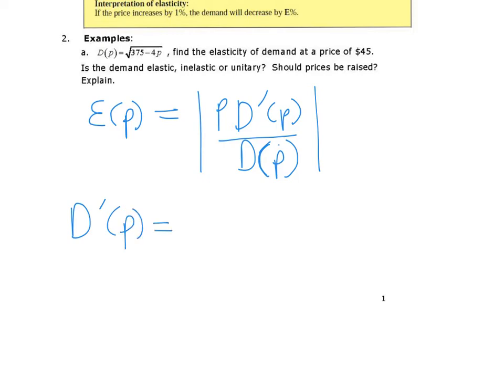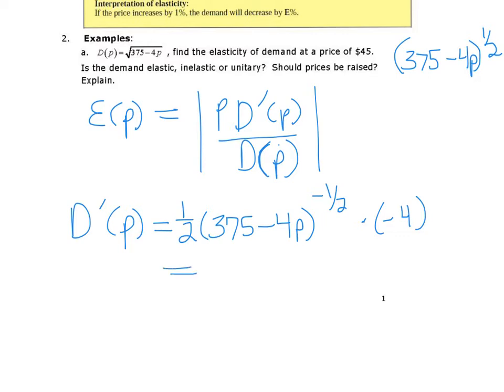So we should find what d prime of p is. Well, if we wrote that function, made it a little more derivative friendly, it would be 375 minus 4p all to the 1 half power. So taking the derivative of that with the chain rule, I'd get 1 half times 375 minus 4p to the negative 1 half power times negative 4. And simplifying that a bit, we'll get negative 2 times 375 minus 4p to the negative 1 half. So there's our derivative.